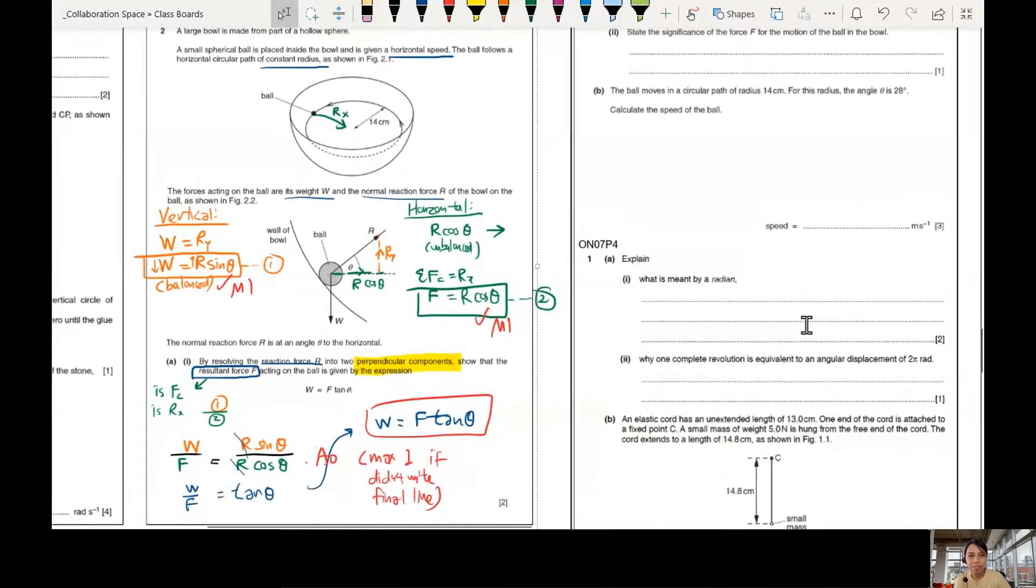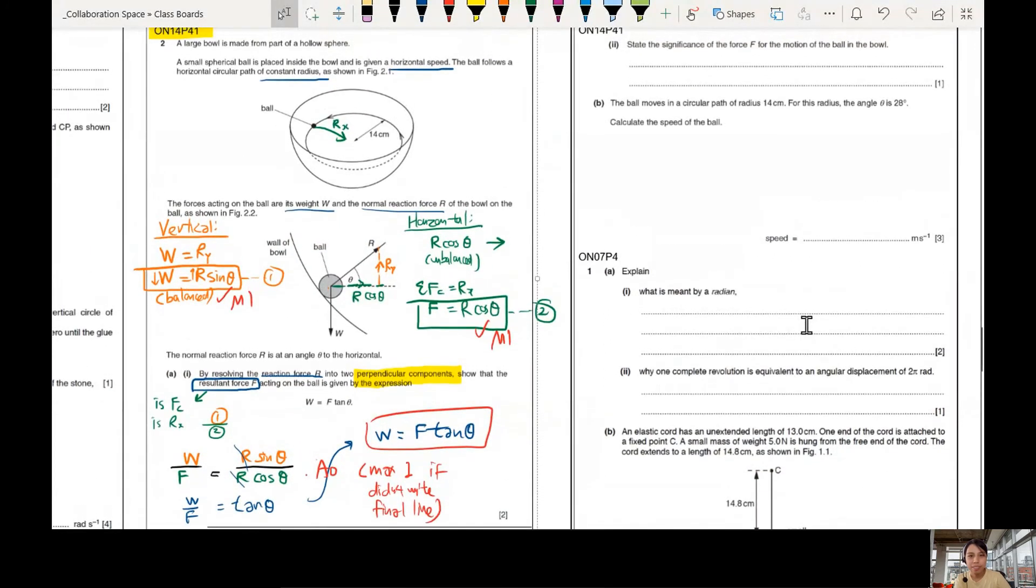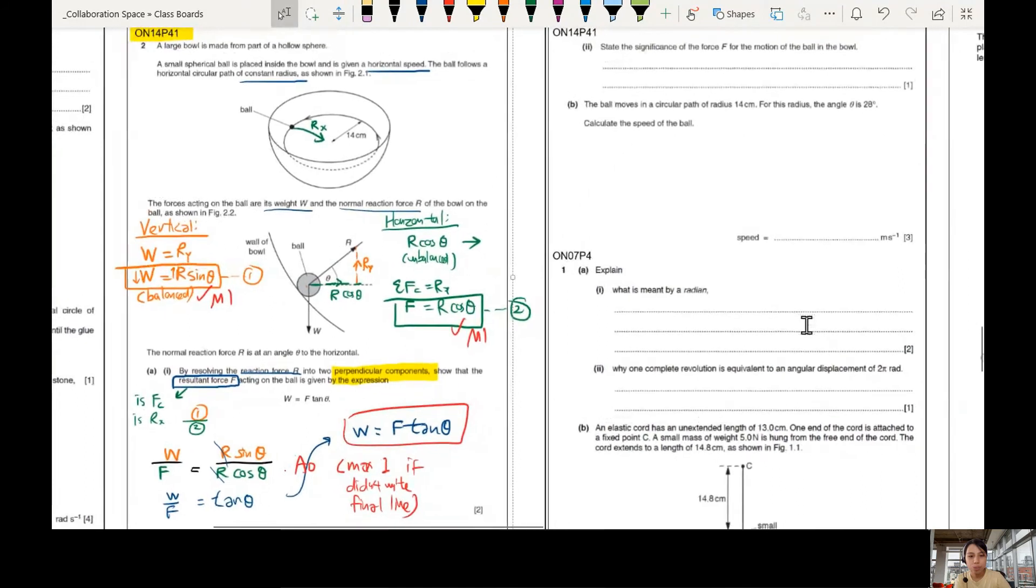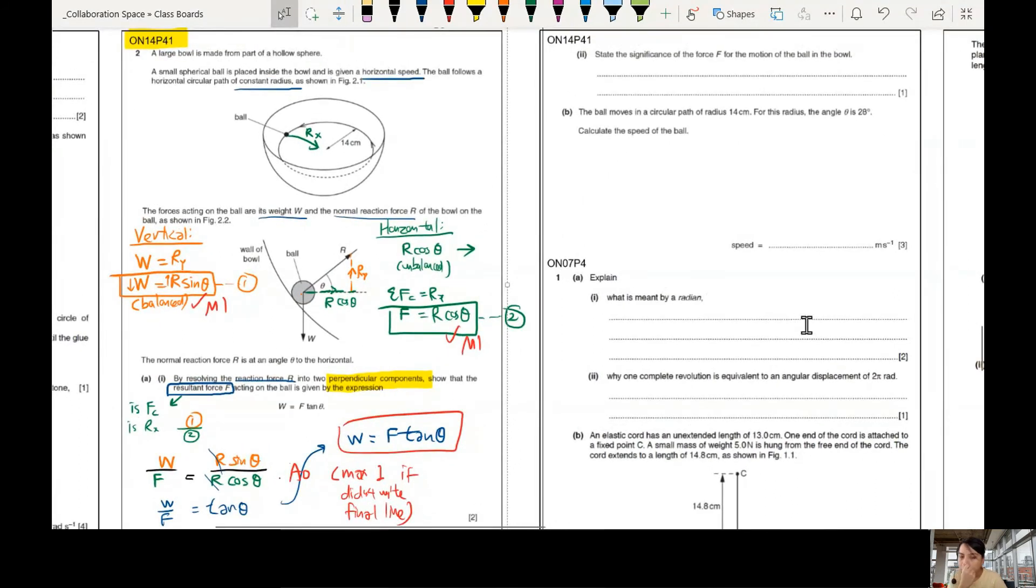Okay, last part. Let's zoom out so you can see the whole thing. State the significance of F for the motion of the ball in the bowl. Why must we have this F, which is this thing? If you don't have F, what happens?